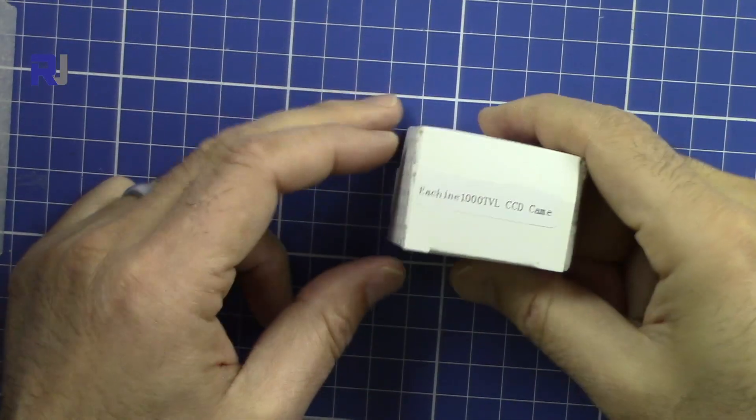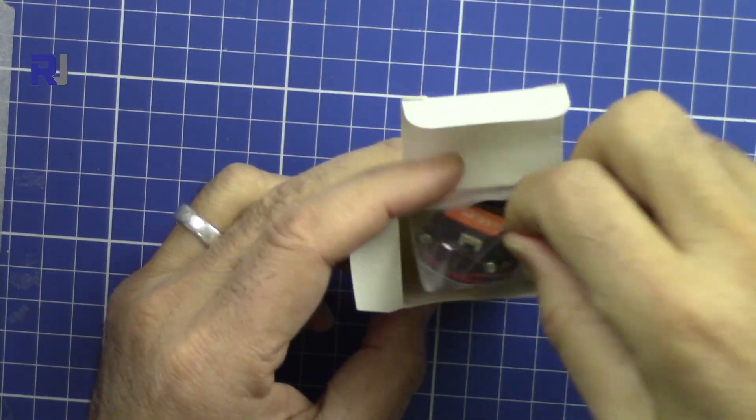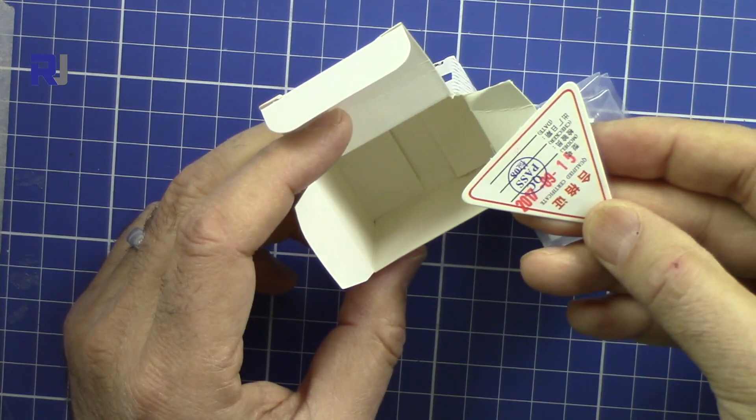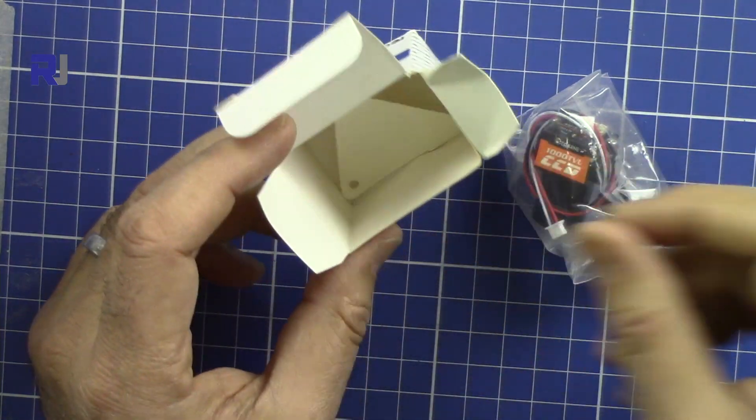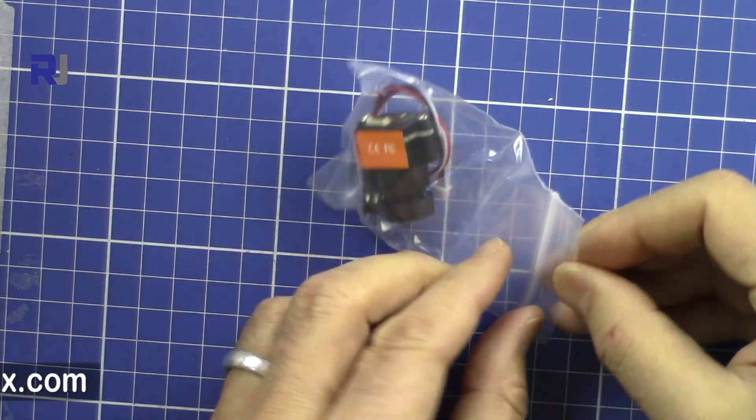Very compact design. So this is the camera once you receive it. This is some kind of quality control certificate. You don't need any manual for this because it's very easy to use.